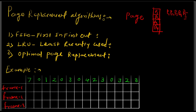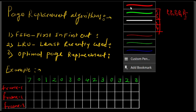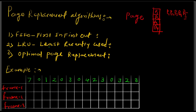Which page is to be replaced from memory is decided by three algorithms. The first algorithm is FIFO, which stands for First In First Out. The next one is LRU, which stands for Least Recently Used. The third one is the Optimal Page Replacement algorithm. We will study these three algorithms with examples so you understand exactly how page replacement works.